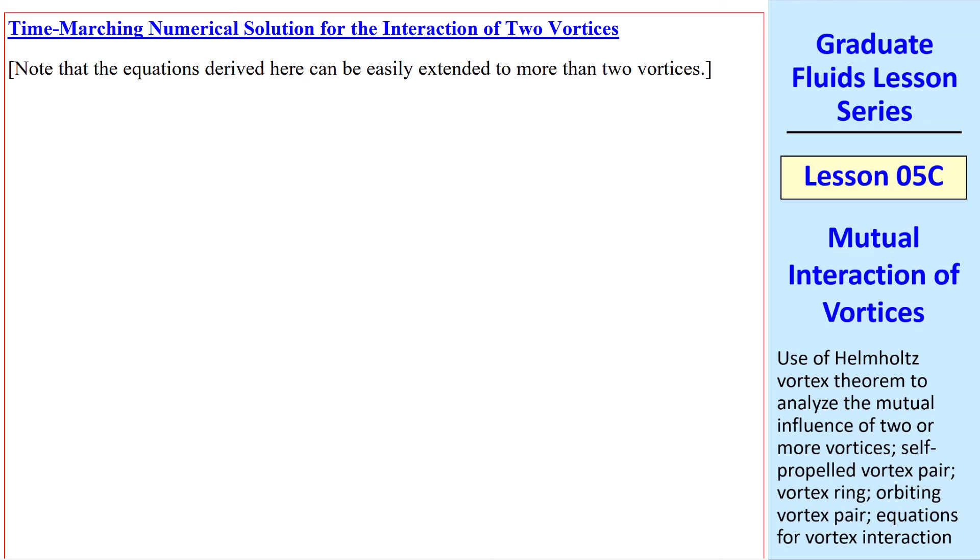Now let's talk about a time-marching numerical solution for the interaction of two vortices. The way we'll set this up is to write four first-order, nonlinear, ordinary differential equations, or ODEs, for our four variables, x_1, y_1, x_2, and y_2, which are all functions of time. In other words, we want to track where these two vortices are going. How does x_1 and y_1 vary with time, and how does x_2 and y_2 vary with time?